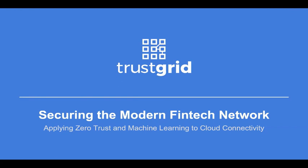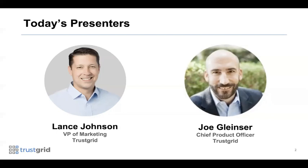Today's webinar is about securing the modern fintech network, where we're going to start talking about applying zero trust architectures to the network and machine learning to our cloud connectivity as it relates to fintech networks. My name is Lance Johnson, VP of marketing at TrustGrid, and with me today is Joe Gleinzer, co-founder and chief product officer of TrustGrid. TrustGrid is a zero trust networking solution that combines elements of SD-WAN, edge computing, and zero trust remote user access into a single platform. With those intros behind us, let's go ahead and get started.